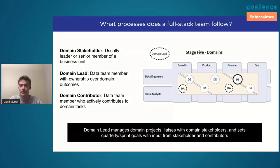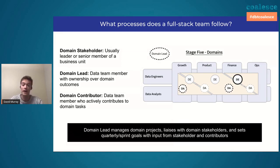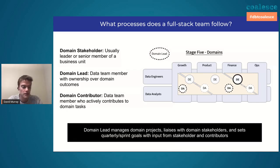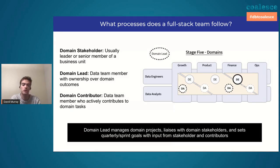If it's ten or fifteen days of work, he will go talk to more domain contributors and try to get help on those projects. Those domain contributors then agree on whether they have time for this, whether it's a priority, or whether a growth project needs their attention instead. They agree to the work for the next two weeks, following an agile process.